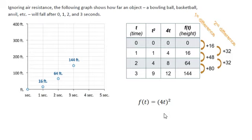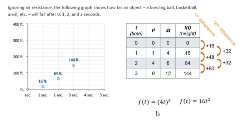The first expression takes the input, multiplies it by 4, then squares those values. The second expression takes the time, squares it first, then multiplies by 16. These are equivalent expressions — regardless of which I use, I get the same outputs from the same inputs. Additionally, if I distribute the exponent of 2 to the 4 and to the t in (4t)², 4 squared is 16 and t squared is t², so I still end up with 16t². This simplified form is the one we want to use.